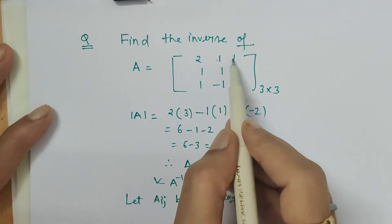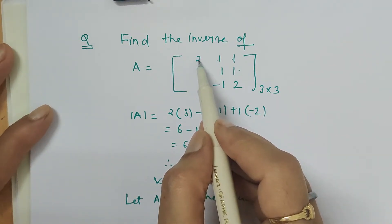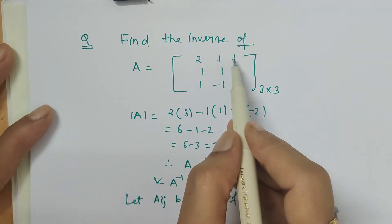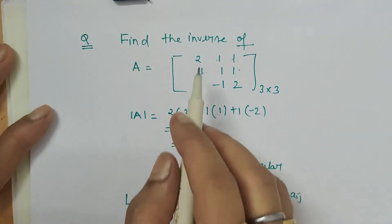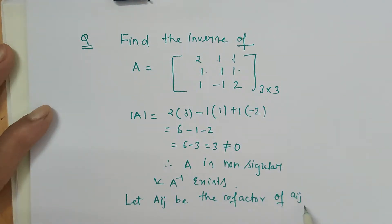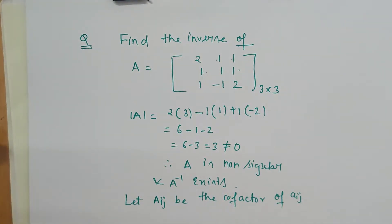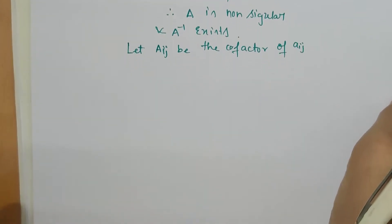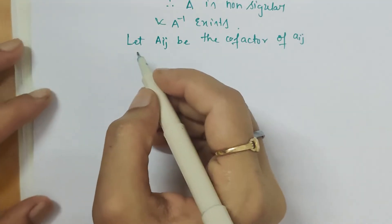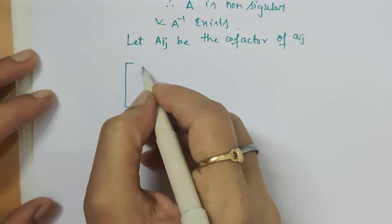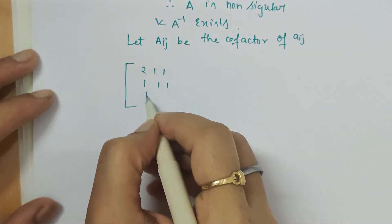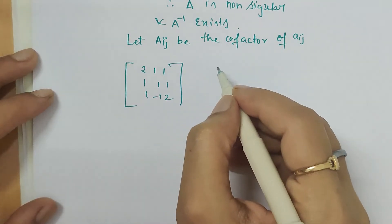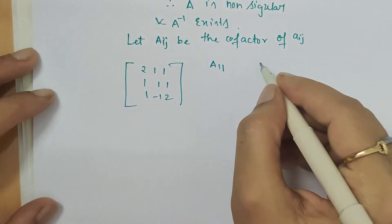Small a_ij refers to the values at positions a11, a12, and so on, while capital A_ij stands for the cofactor. I am rewriting the matrix here for better understanding: the matrix is 2, 1, 1 / 1, 1, 1 / minus 1, 2.